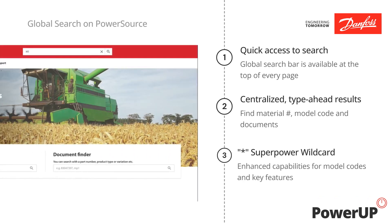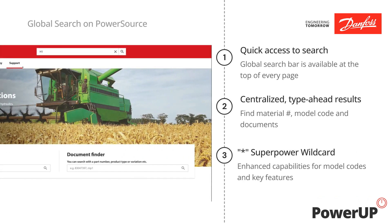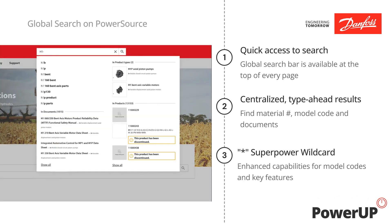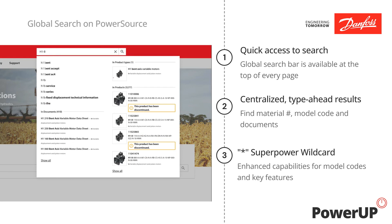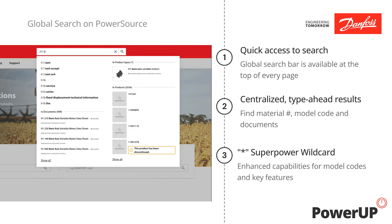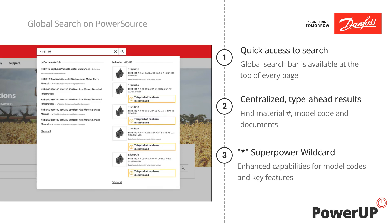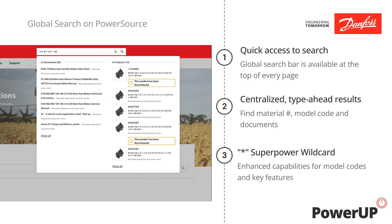Your favorite superpower is the asterisk wildcard search. Use the asterisk to fill in missing data and streamline your search process. For example, you can skip entering all details of the model code that are not relevant for you.